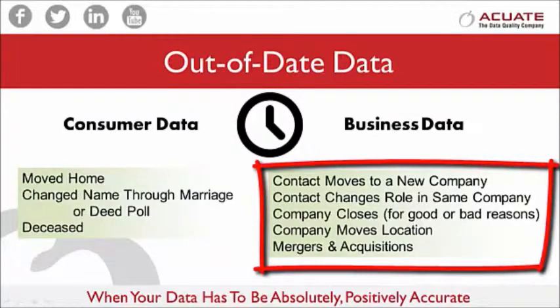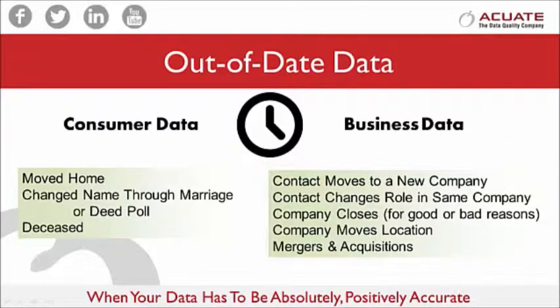For business data, contacts can move jobs or change roles. Companies can close for good or bad reasons, they may move location, or they may get merged.